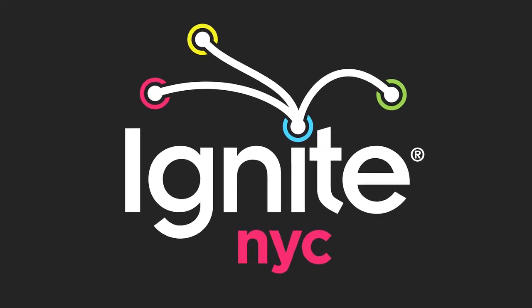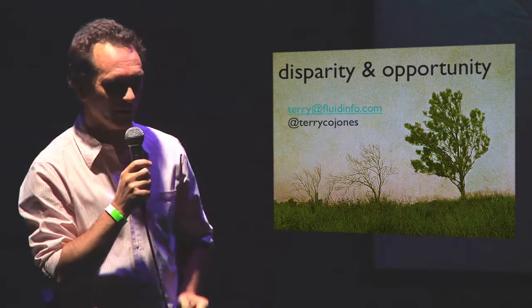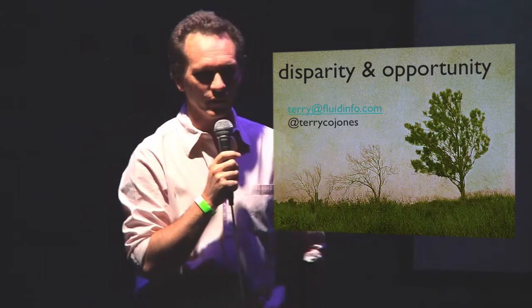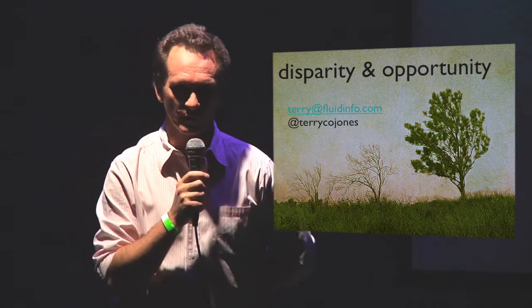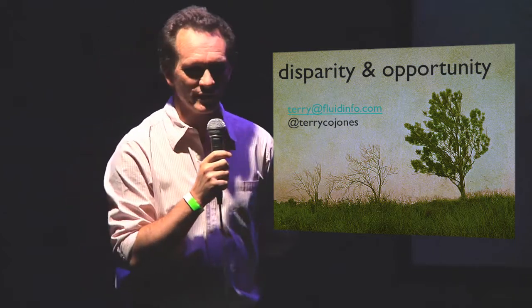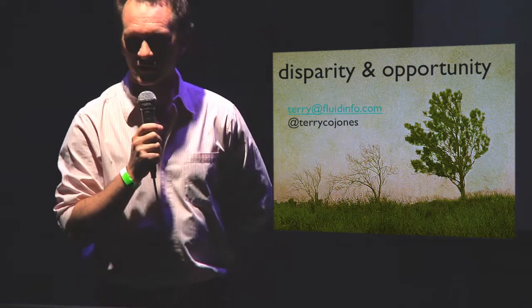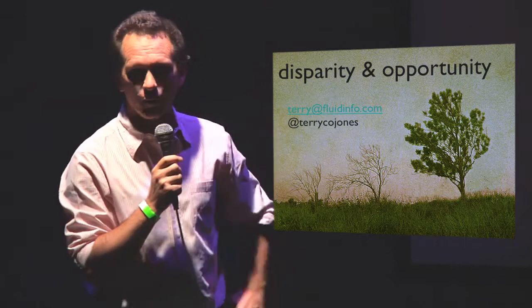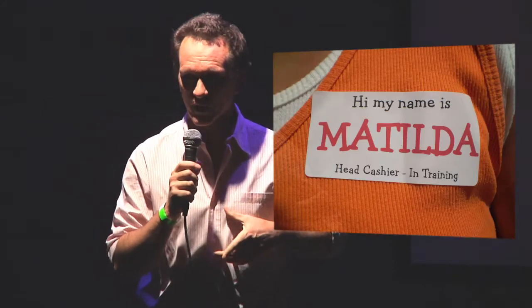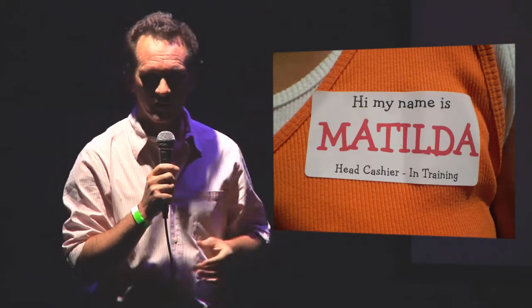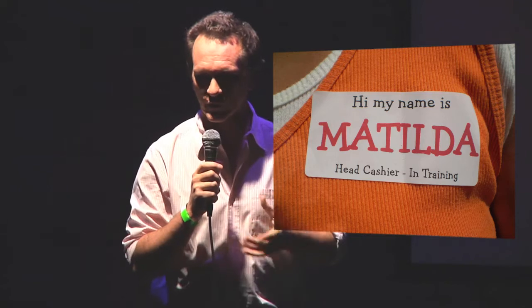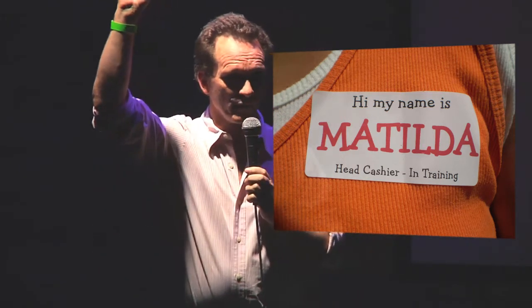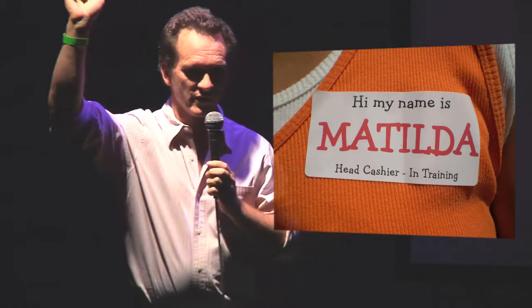I want to get you thinking about the difference between the way that we work with information in the natural world and the way that we work with it when we're using computers. I'm going to do that by giving you some very simple examples and asking some simple questions. First of all, when you go to a conference, we put your name around your neck. Why do we do that? Why do we choose to put it right there? When we come to an event like this tonight, we put this thing around my wrist. Why is it around my wrist?